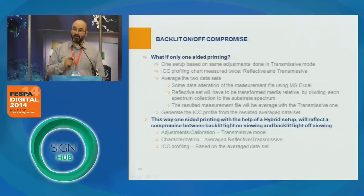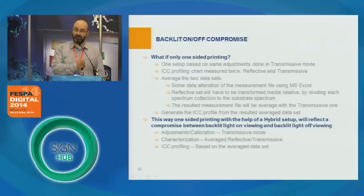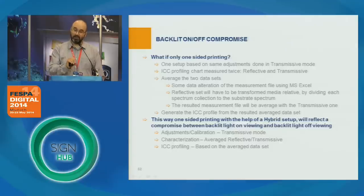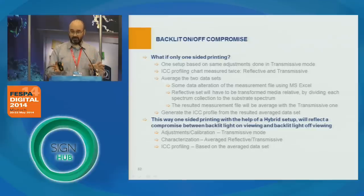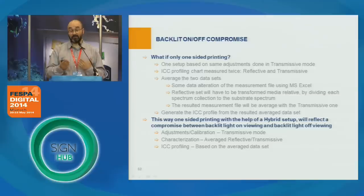What if we are only printing one side? Obviously we cannot obtain the same level of performance as with two-sided printing or three ink layer printing. But some applications require just one ink layer, and you still want better production in both light on and light off. The solution is a compromise: we do measurement in backlit mode, we do measurement in reflective mode, we average them, and we use the resulting characterization data for a universal set that addresses both reflective and transmission printing. It's not perfect, but if you really need to print just one ink layer, you can do it this way, and it will solve your light on/light off situation.